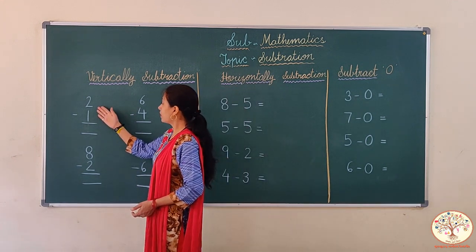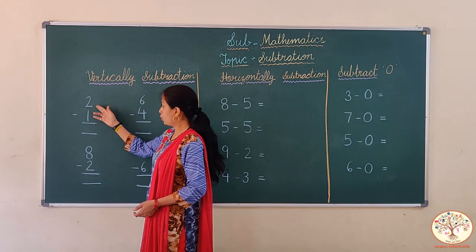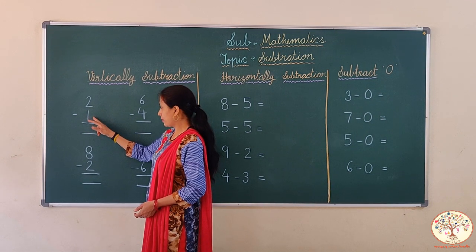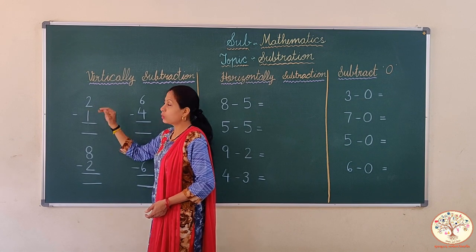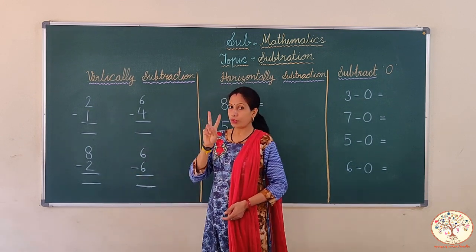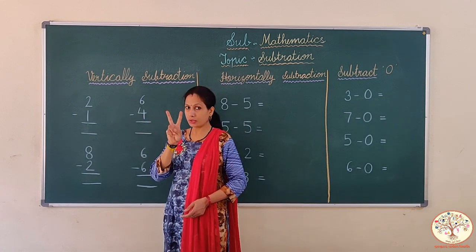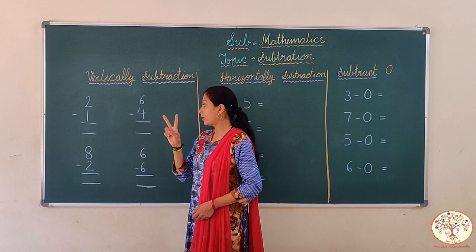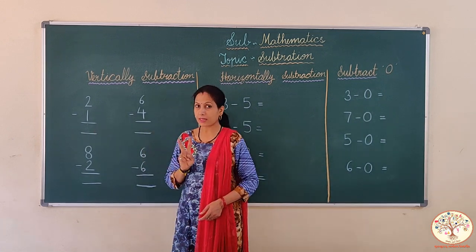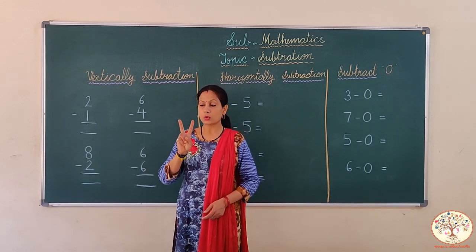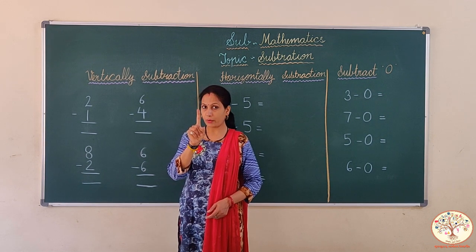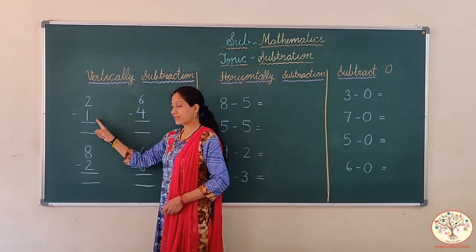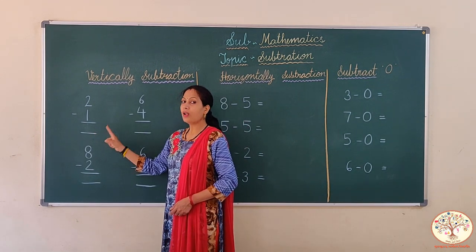Now look here. This is number 2. 2 minus 1. We need to subtract 1 from number 2. So kids, open your two fingers — the first number is 2 and 2 is the big number. Open your two fingers and close 1. Now you have only one finger. So 2 minus 1 is equal to 1.